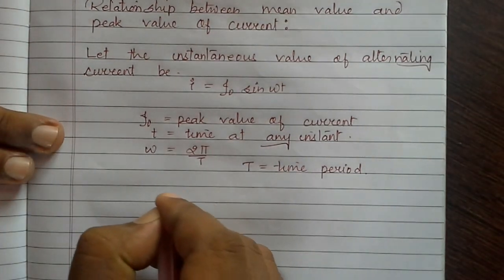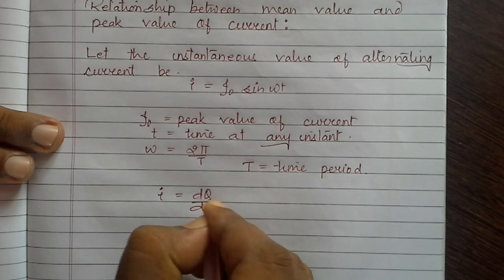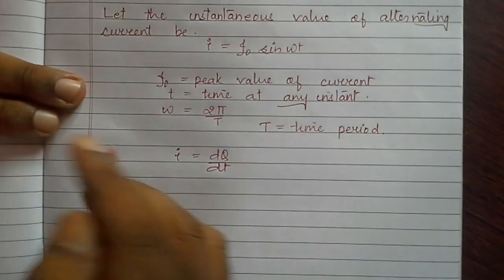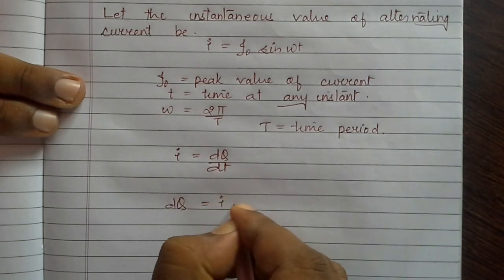We know that i equals dq by dt, or charge flow per unit time, or we can say dq equals i into dt.